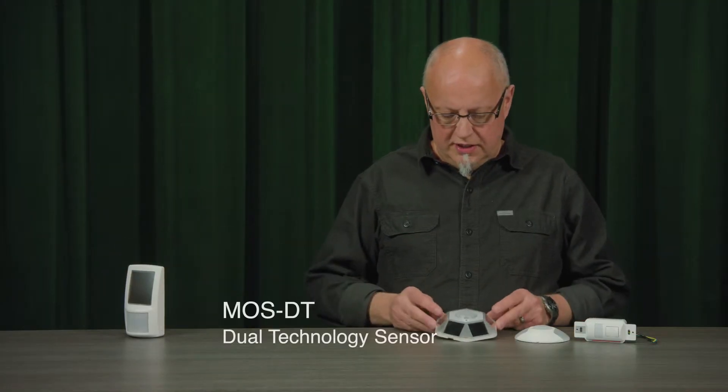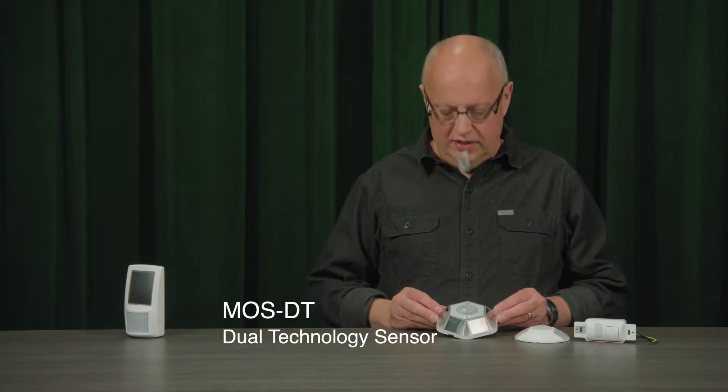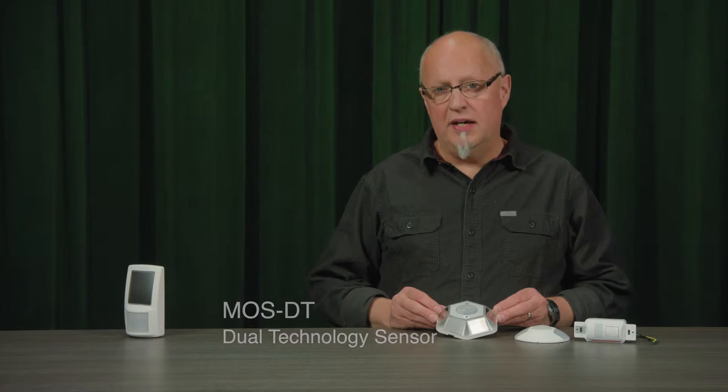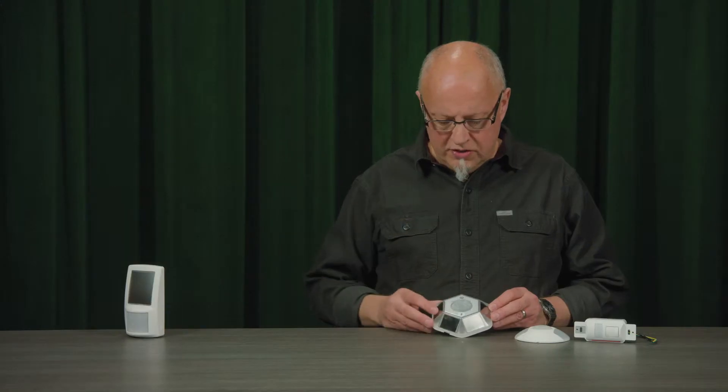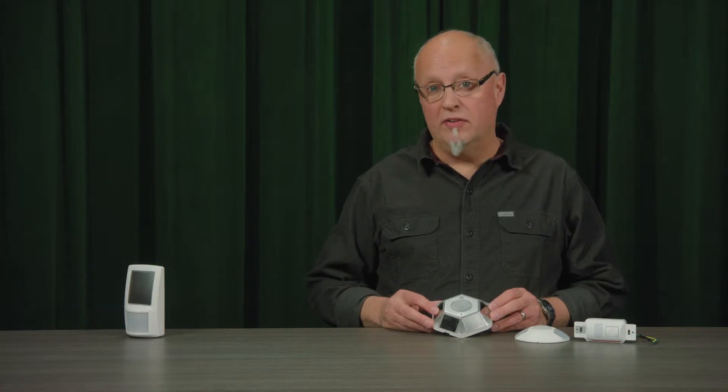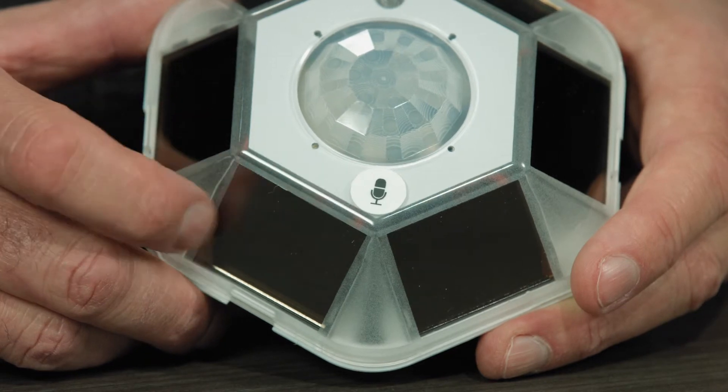This is the MOS ceiling sensor. It's available as a passive infrared and a dual technology sensor. The dual technology models have a microphone label on it, so when it is mounted on the ceiling you should be able to see that label and know that you've got a dual tech sensor.